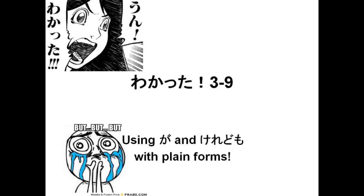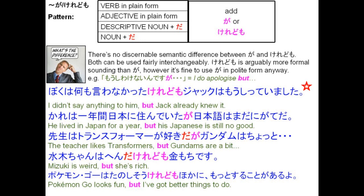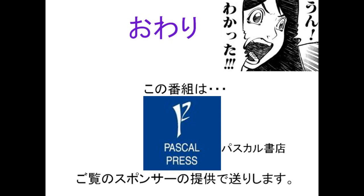3-9: using ga and keredomo in plain form to express 'but'. The pattern is to take a verb or adjective in its plain form, and if it's a descriptive noun or noun in plain form add da after it, then add ga or keredomo to express 'but'. There's no discernible semantic difference between ga and keredomo — both can be used fairly interchangeably. Keredomo is arguably more formal sounding than ga, however it's perfectly fine to use ga in polite settings anyway. For example: I didn't say anything to him, but Jack already knew it. Pokemon Go looks fun, but I've got better things to do. And that takes us to the end of Unit 3.